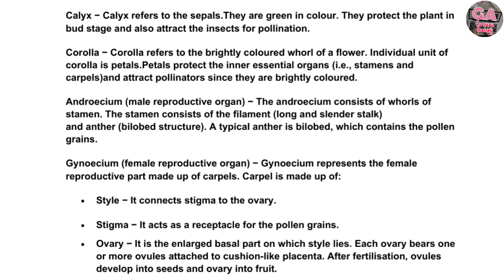Gynoecium represents the female reproductive part made up of carpels. Carpel is made up of style, which connects the stigma to the ovary. Stigma acts as a receptacle for the pollen grains. The ovary is the enlarged basal part on which style lies. Each ovary bears one or more ovules attached to a cushion-like placenta. After fertilization, ovules develop into seeds and the ovary into fruit.